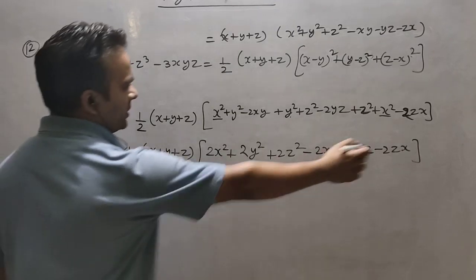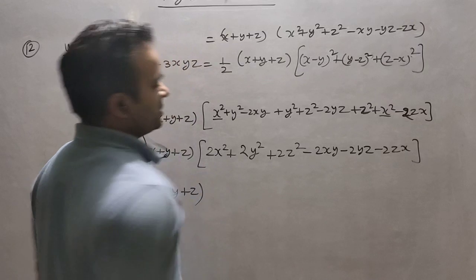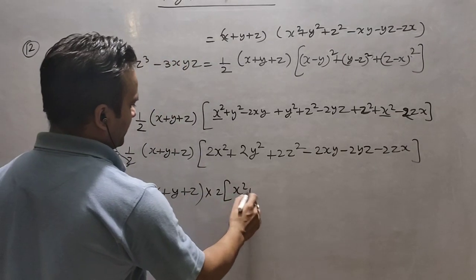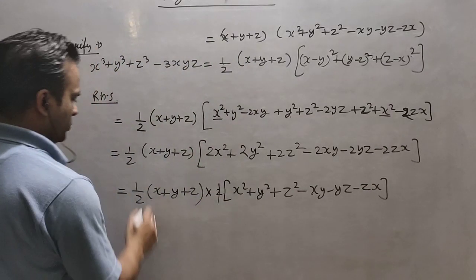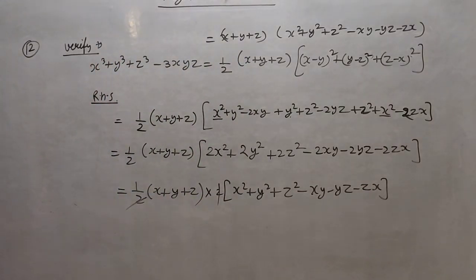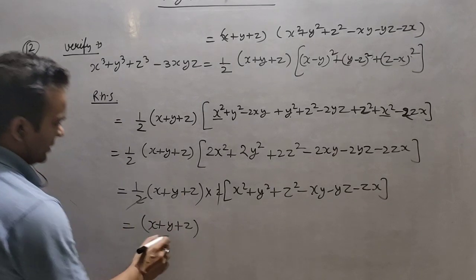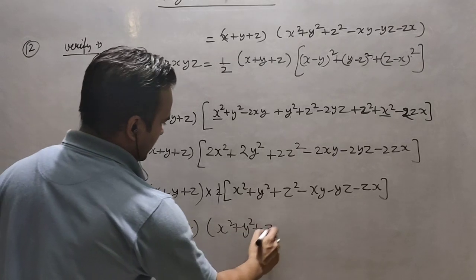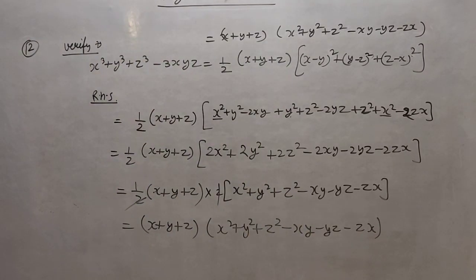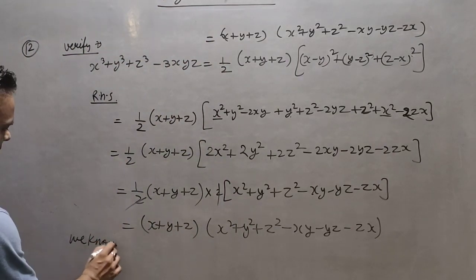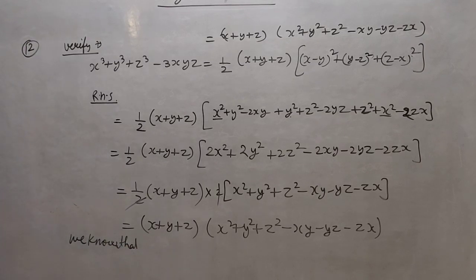What is common in this whole bracket? 2 is common in each term, so we take 2 out. The 2 from outside and the 2 from the bracket cancel with the one-half, leaving (x + y + z)(x² + y² + z² - xy - yz - zx), which is exactly the identity for the left-hand side. So the left-hand side equals the right-hand side and it is verified.